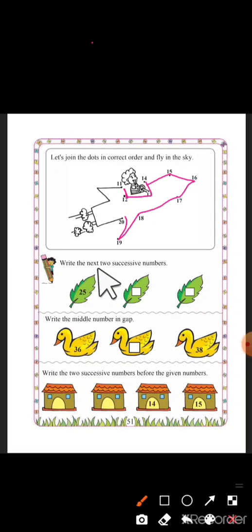Write the next two successive numbers after 25. Which number will come? Very good, 26, and after 26, 27.